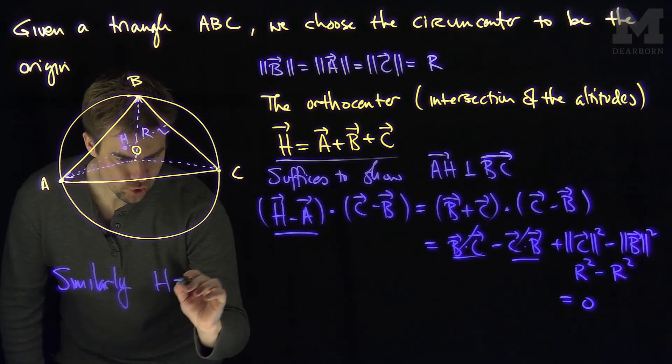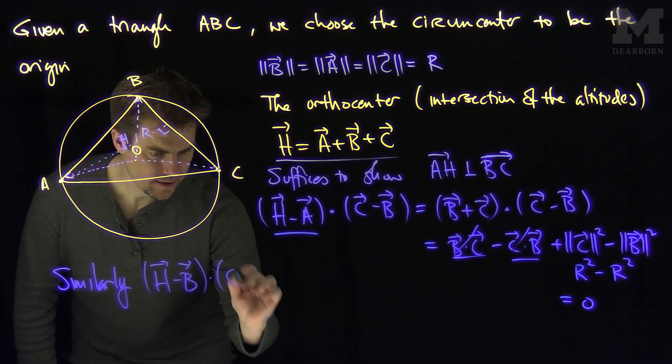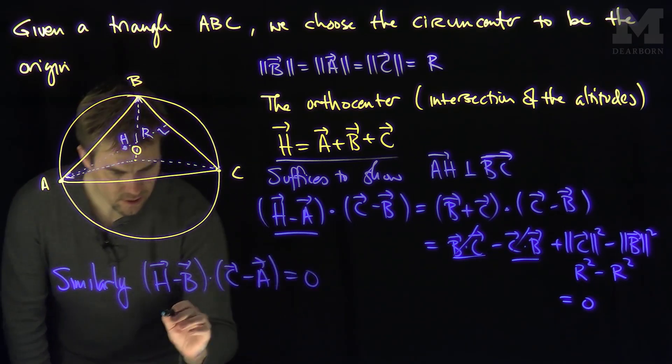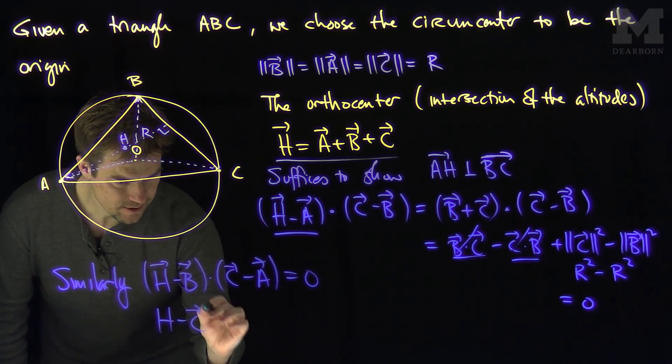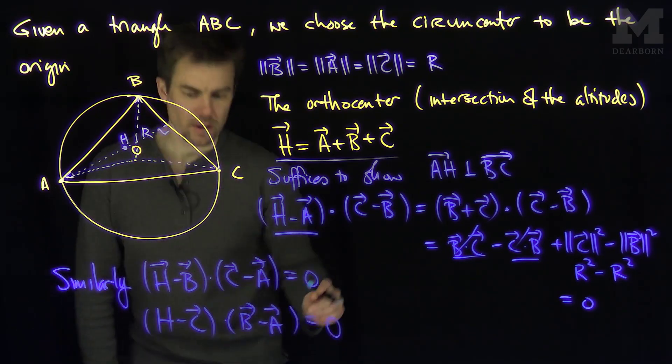we have that H minus B dot C minus A is equal to zero, and H minus C dot B minus A is equal to zero.